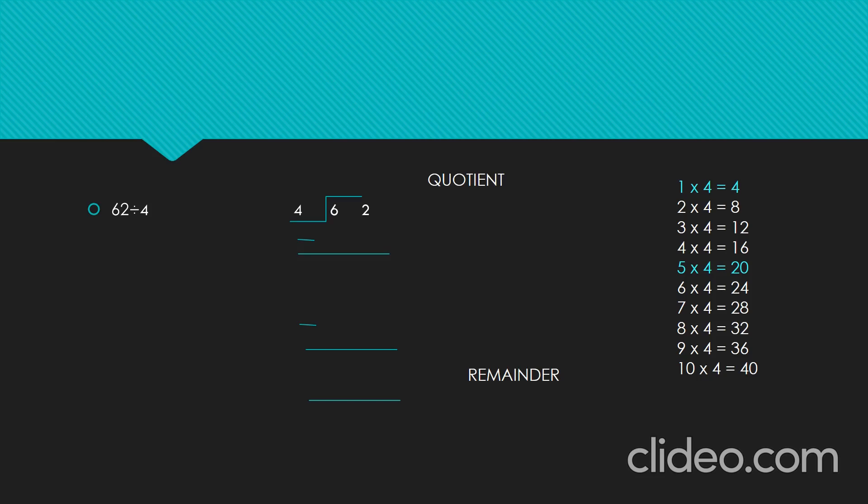Let's see this example: 62 divided by 4. We all know that the first step is to compare the digits — that is, the leftmost digit in the dividend with the divisor. That is 6 with 4. As 6 is greater than 4, we can divide 6 by 4. By using the tables of 4, we get the product nearest to 6, which is 4. That is, 1 four's are 4.